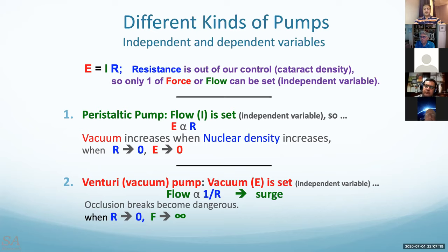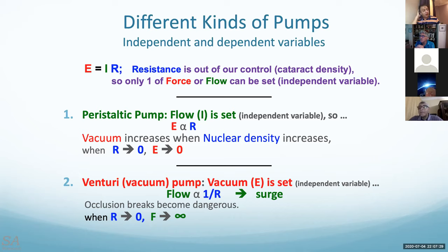Thank you, Steve, for this well-explained point. The frequent question is about the peristaltic pump versus venturi pump. The peristaltic vacuum means that the vacuum will build up after occlusion. So the equation tells you that vacuum becomes a function of resistance.